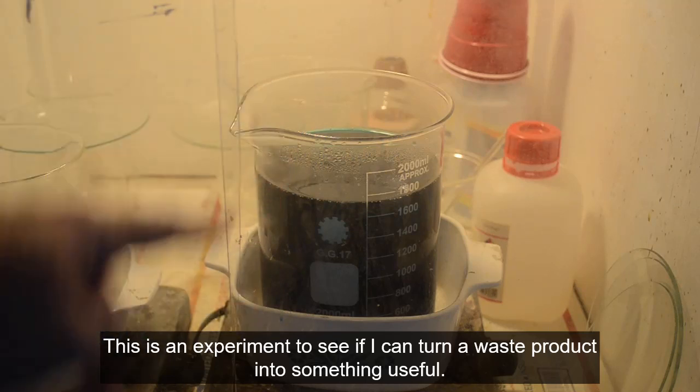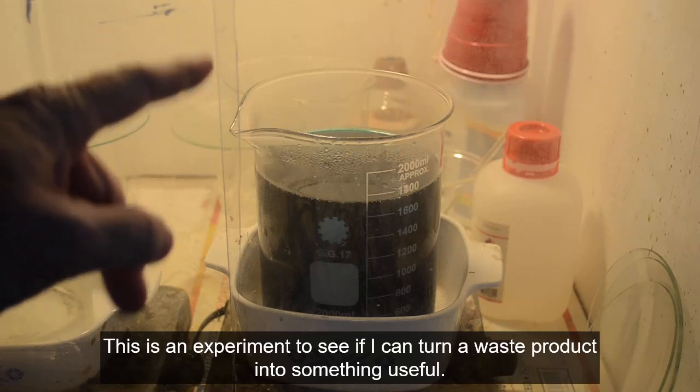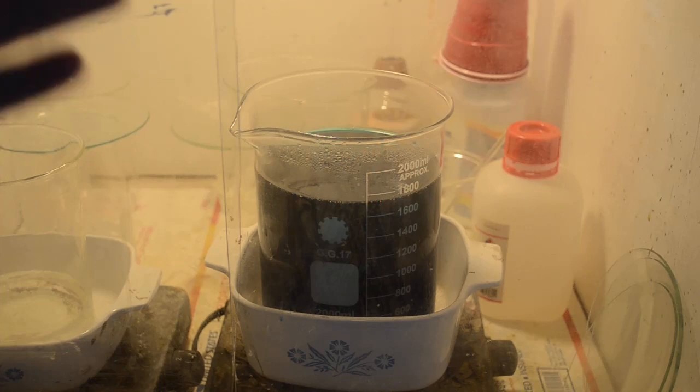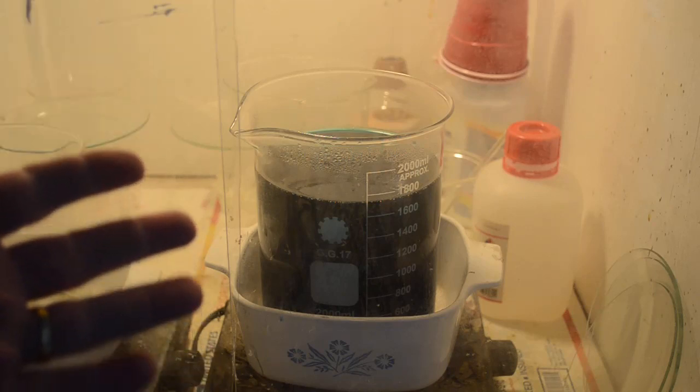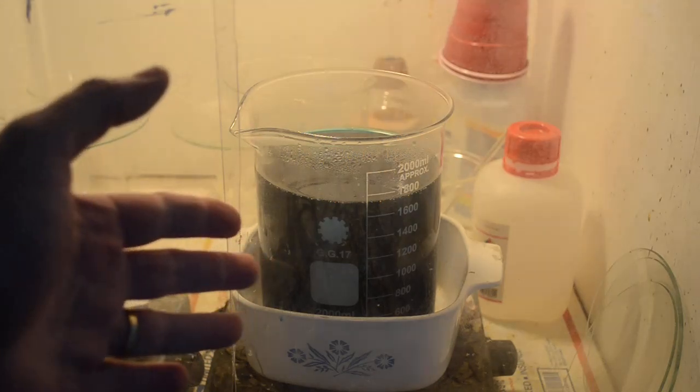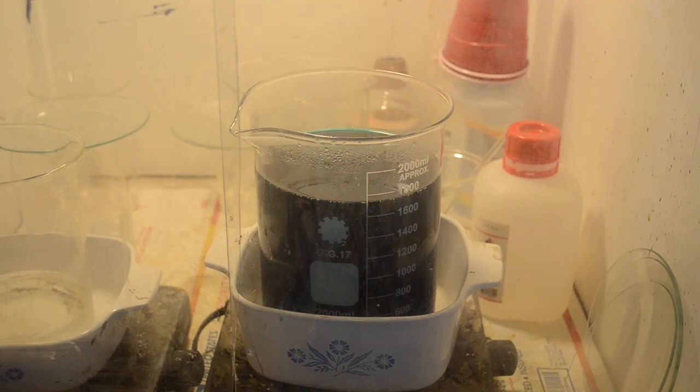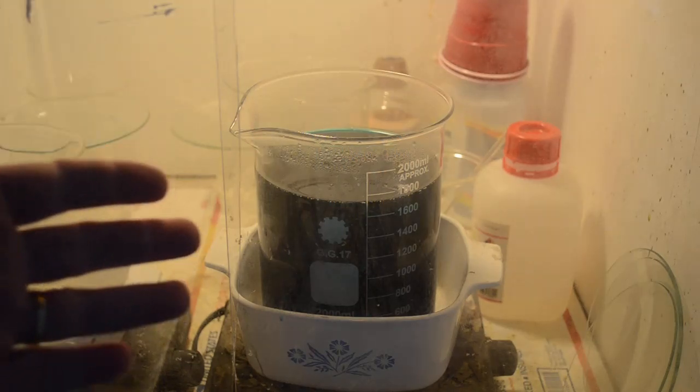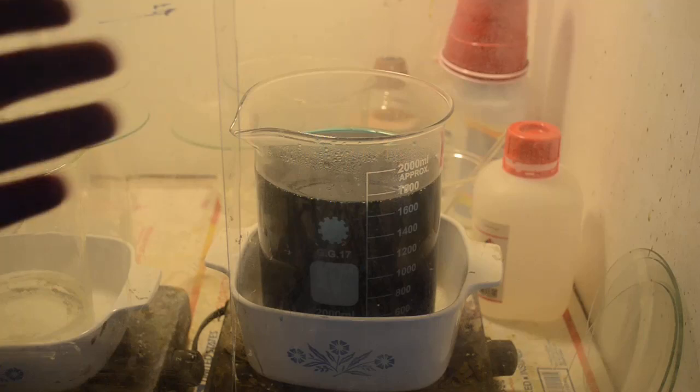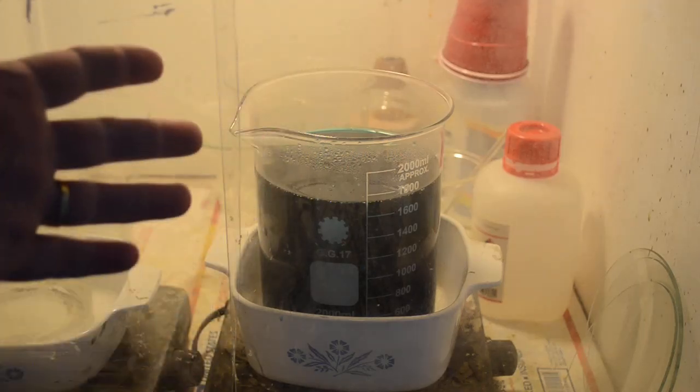I've got some spent solution here. This is the liquid I have used to extract the base metals from IC chip remains after I've incinerated them, pulverized them, sluiced them. I treat it with nitric acid to dissolve the base metals, and I have extracted silver from this, so there's no significant silver left in it. It's basically just a waste product at this point.